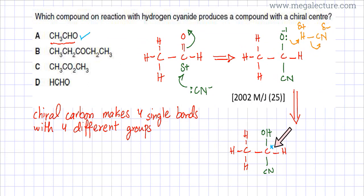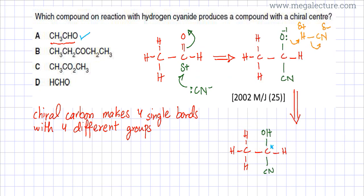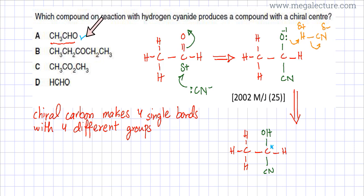Looking at the product, there is a carbon atom making four single bonds with four completely different groups: an OH group on one side, a hydrogen on another side, a CN group on one side, and a CH₃ group on the fourth side. All four groups are different, so this carbon is chiral. Option A is correct because ethanal reacts with HCN to produce a compound with a chiral center.